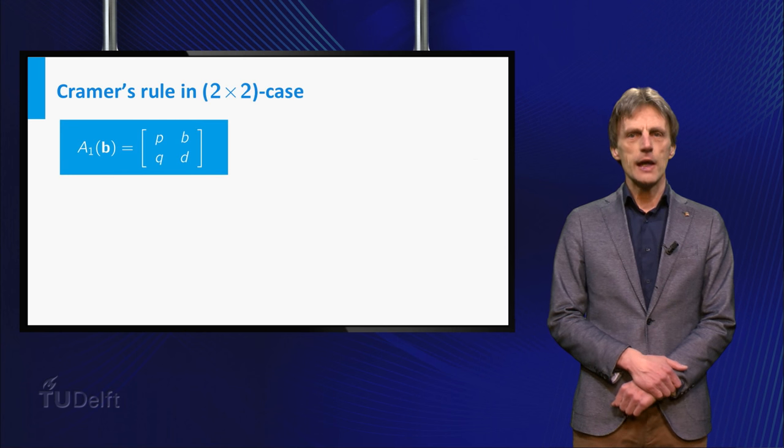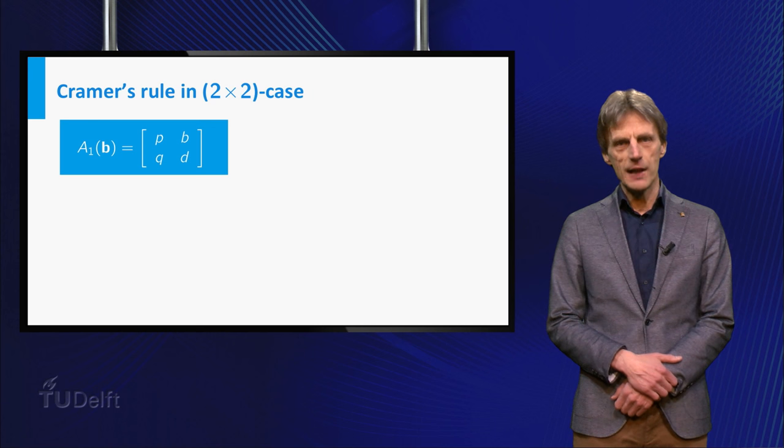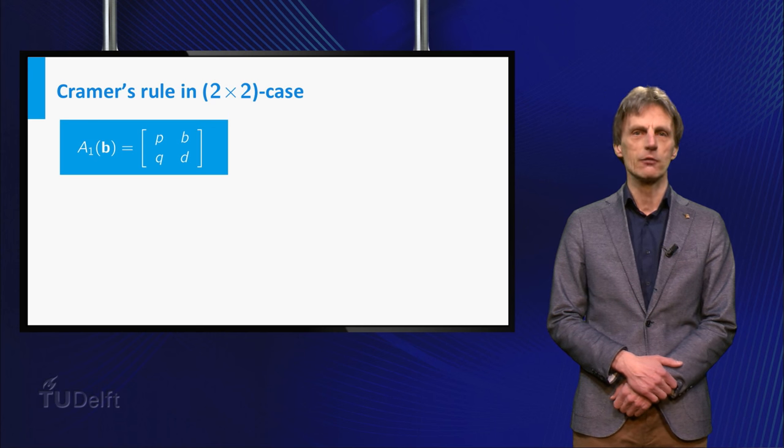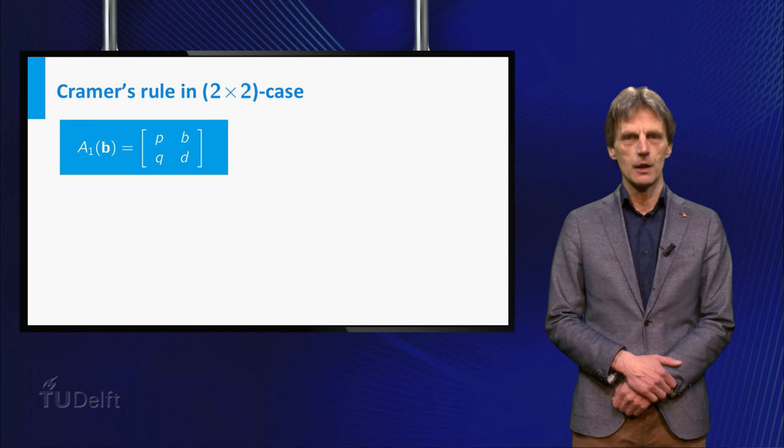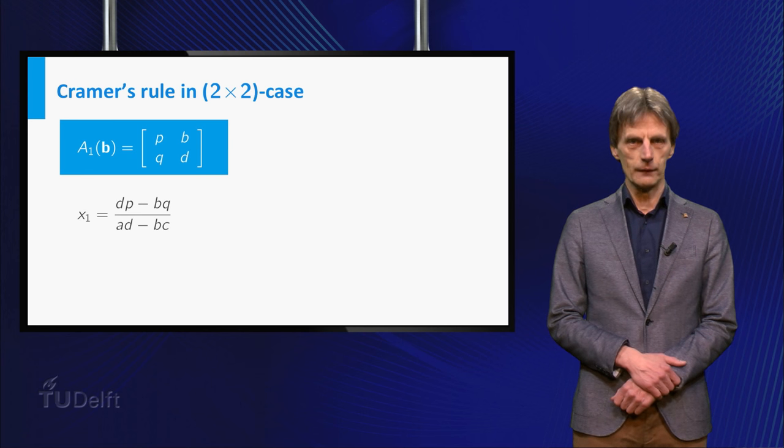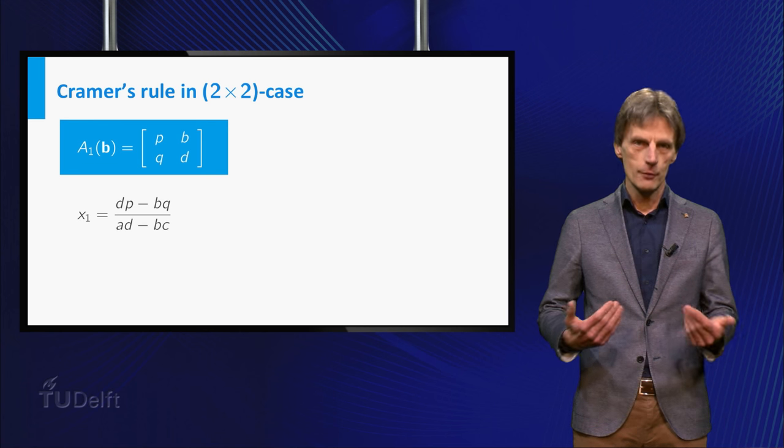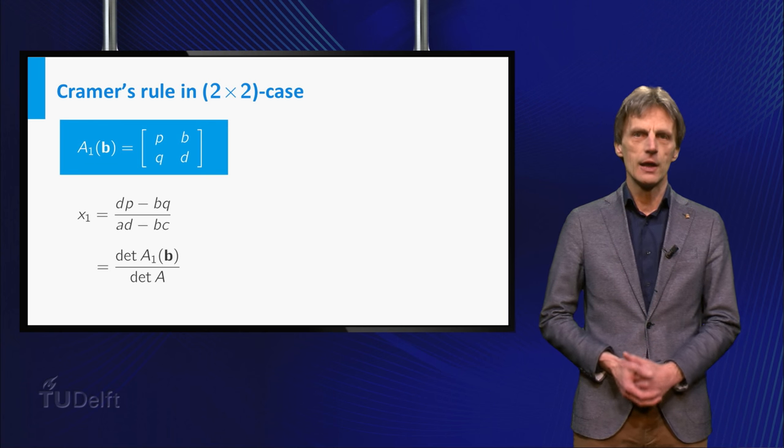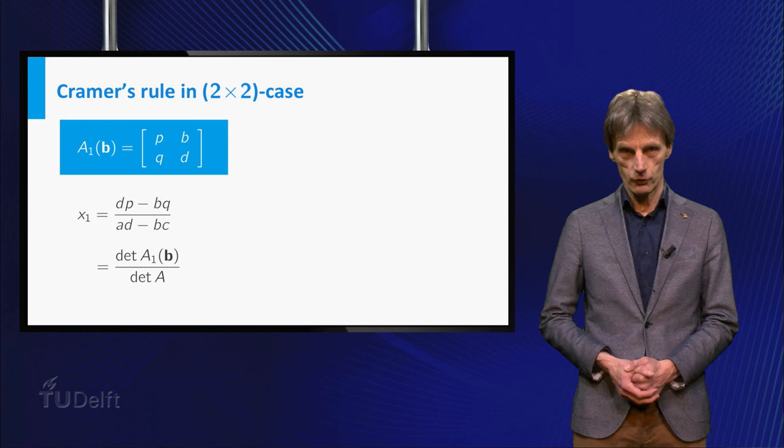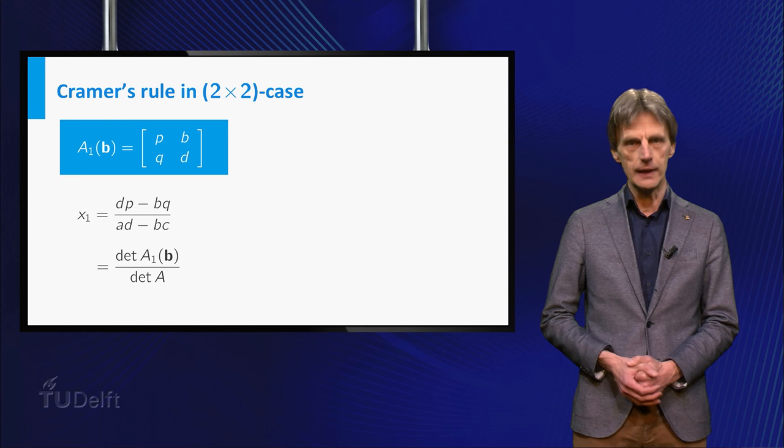Consider the matrix A1(b) which is obtained by replacing the first column of A by the right hand side b. Now have a look again at the formula for x1. The numerator of x1 is equal to the determinant of A1(b), hence x1 is equal to the determinant of A1(b) divided by the determinant of A.